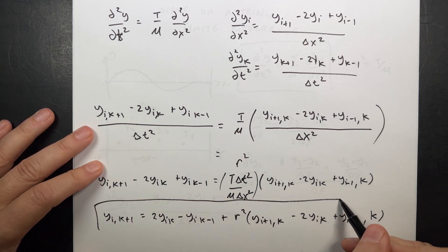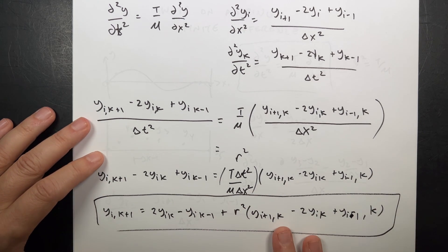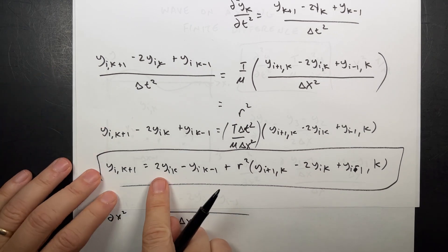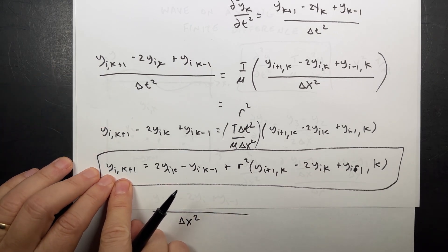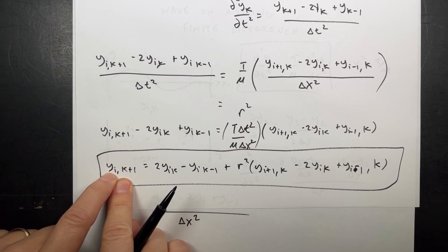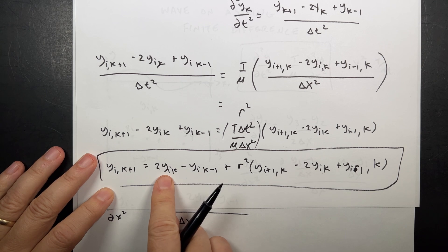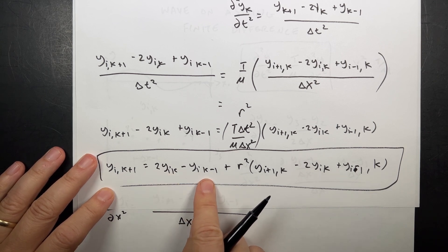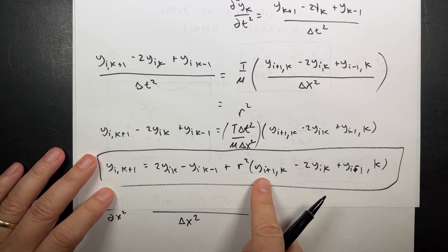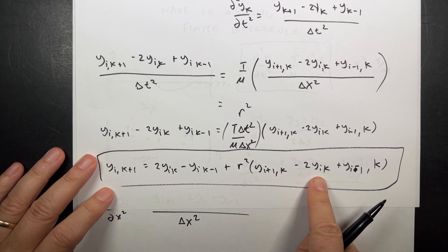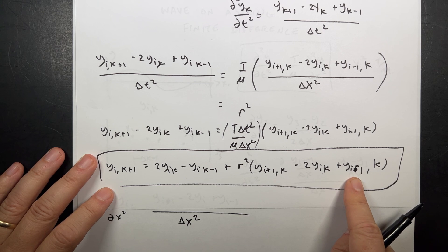Adding the terms to both sides and solving for the future position: y_i,k+1 equals 2y_i,k minus y_i,k-1 plus r squared times (y_i+1,k minus 2y_i,k plus y_i-1,k). This says that to find the new position of any element on the string, I need its current position, its previous position, and the current positions of its neighbors to the left and right.